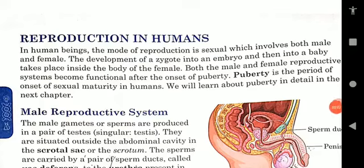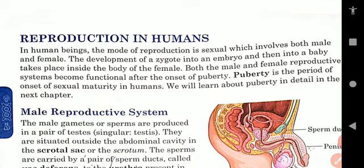Welcome students. Today we are going to study the human reproductive system. In last class I explained the male reproductive system of human beings. There are some problems among some students — they didn't understand the total phenomenon I explained. So I thought I will teach you according to the book that you have for studies. Today's class I am going to teach with your book.